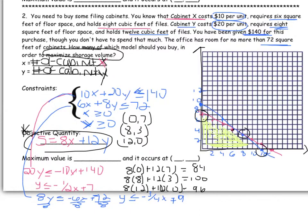So right now, I can see that my maximum value is 100, and it occurs at 8, 3, which means to make 8 X cabinets and 3 Y cabinets.